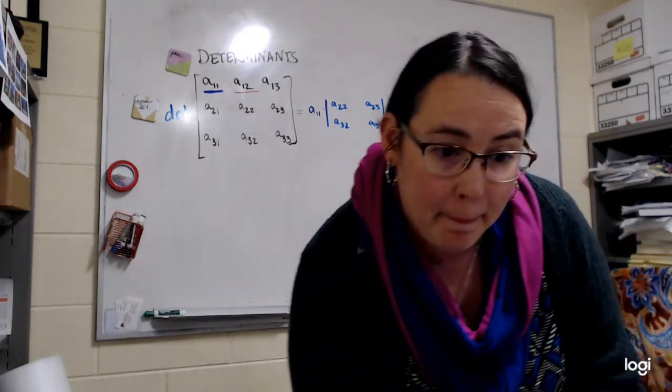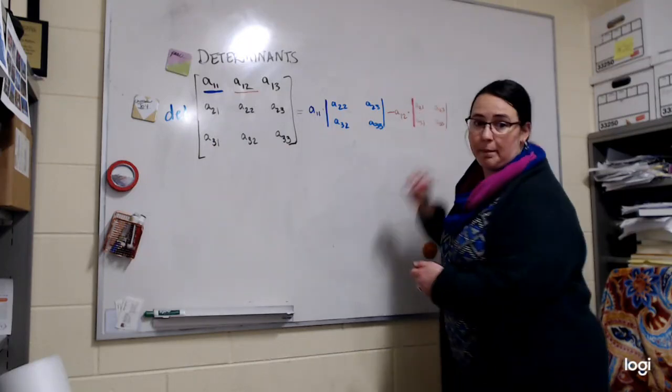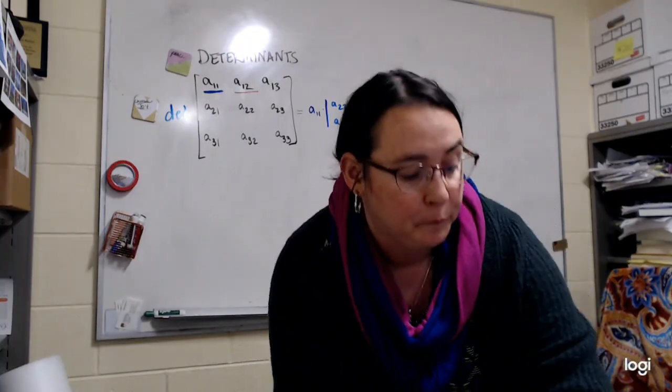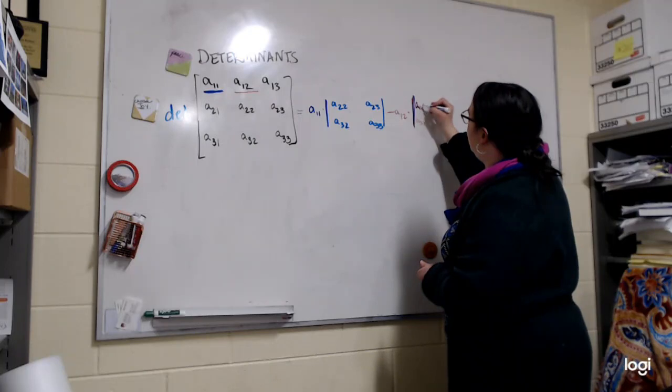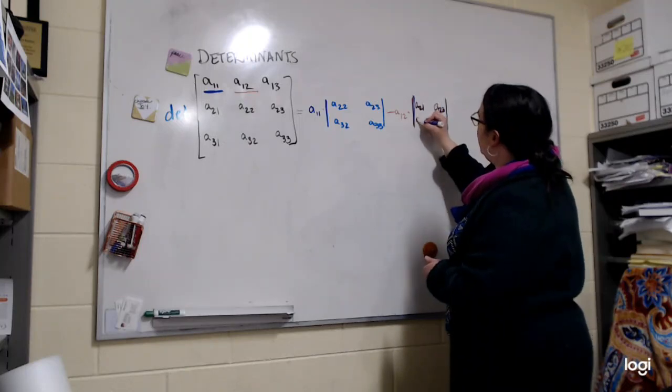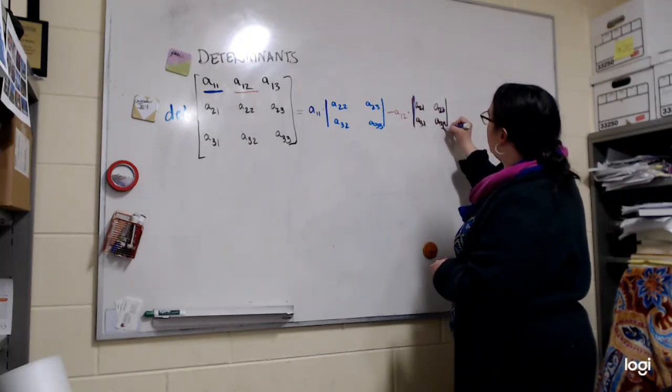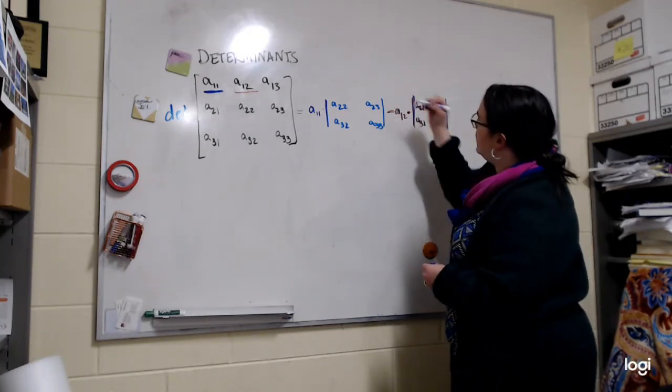That's a little hard to read. Let me make that bigger. Let's see, is that better? Not enough. Let's go purple. There we go. A21, A23, A31, A33. Perfect. And I was multiplying by A12, subtract it.